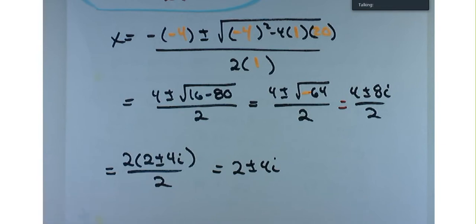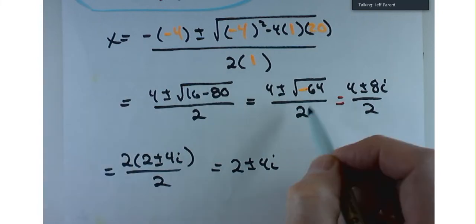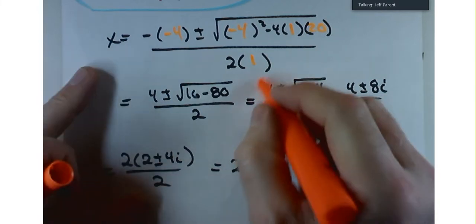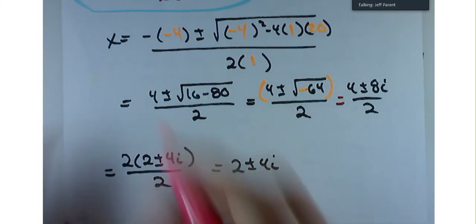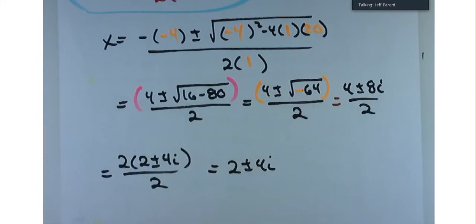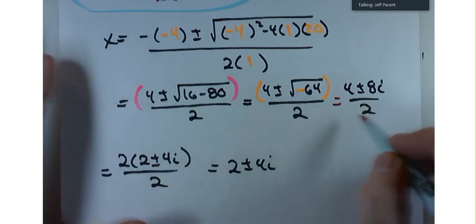An important caution: you can't cancel the 4 and the 2 separately before simplifying, because the whole numerator is one term — you can't cancel into a binomial. As I say to students, when you have terms that are added or subtracted, it's like putting parentheses around them — those terms are married. You can divide both terms in the numerator by 2, which gives the same result: 2 plus or minus 4i.